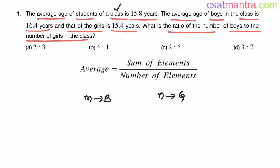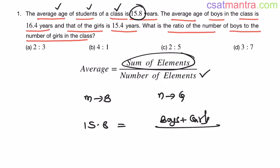Now let's say in this class we have m number of boys and n number of girls. If you don't know something, please assume it and solve from what you know. Average age of students of a class is 15.8. So 15.8 equals sum of elements, sum of ages, ages of boys and girls. Boys plus girls divided by number of elements, number of boys and girls, that is m plus n.